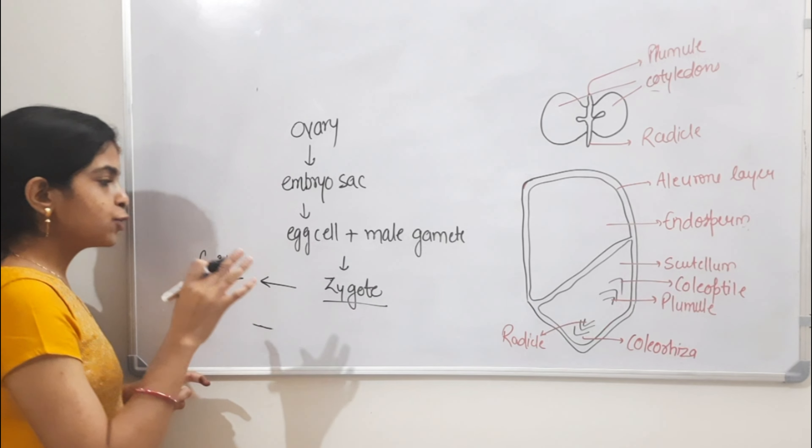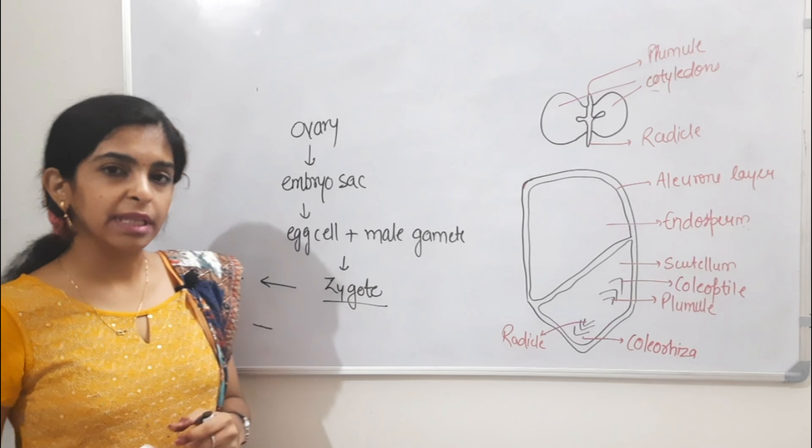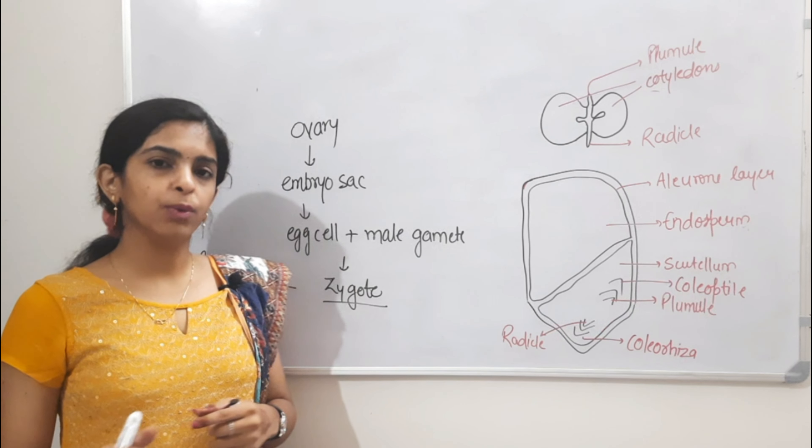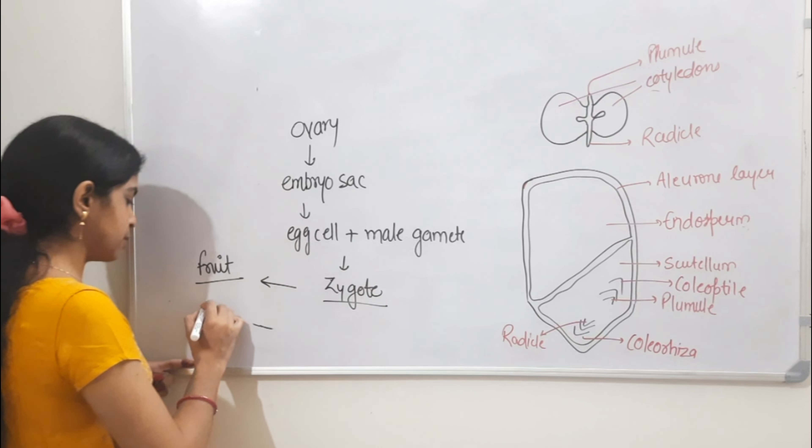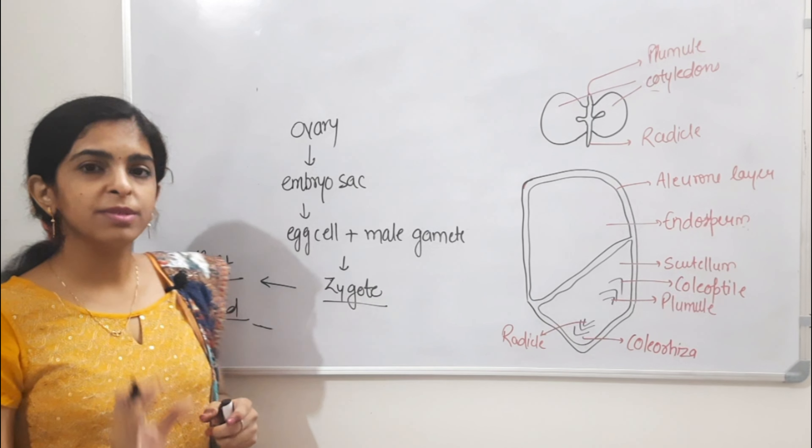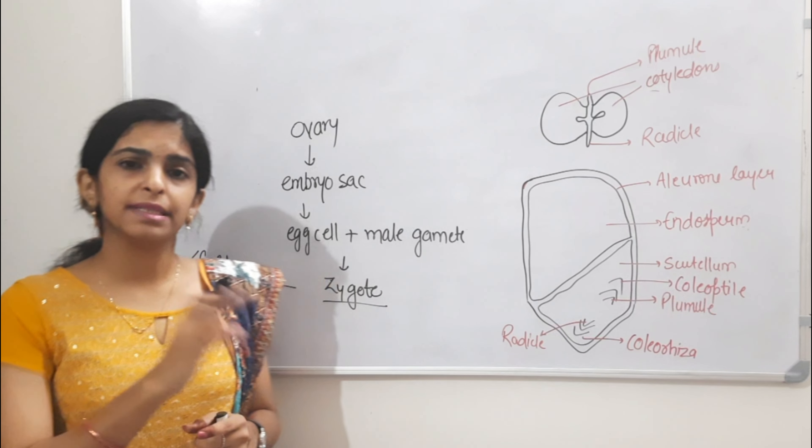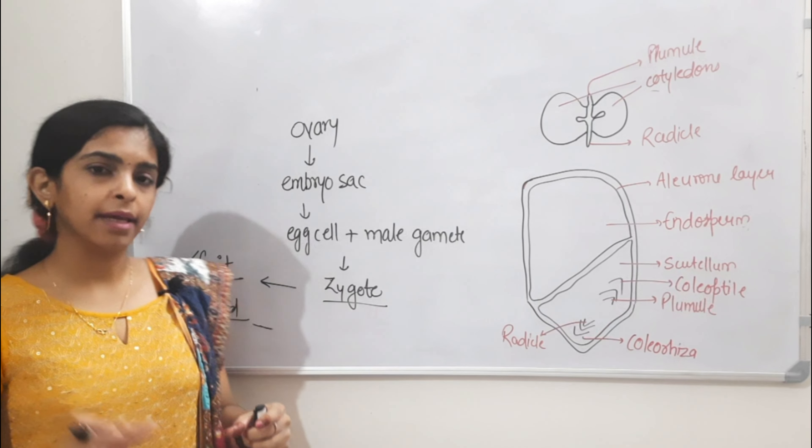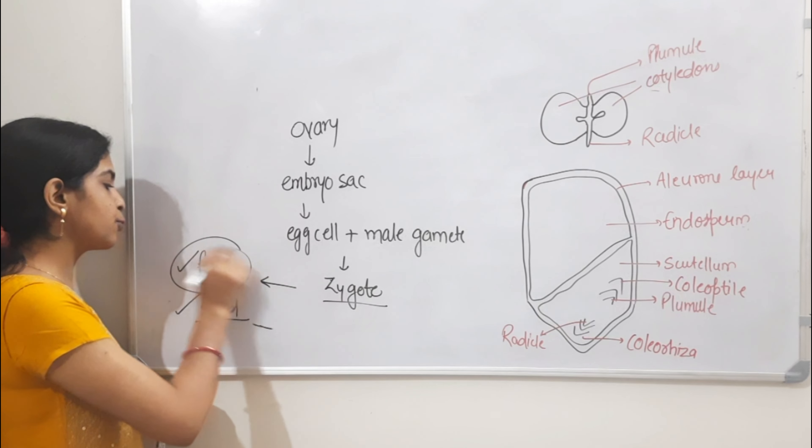If zygote and ovule with ovary layer are present, we call it fruit. And if egg cell plus male gamete with no layer present, we call it simple seed. So fruit and seed - the ovule sac with ovule layer makes fruit.